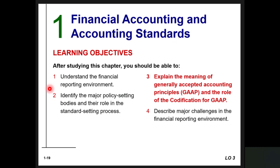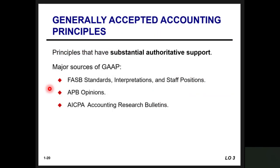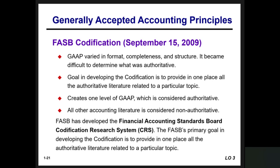Learning objective 3: explain the meaning of generally accepted accounting principles and the role of the codification for GAAP. Generally accepted accounting principles are principles that have substantial authoritative support. Major sources of GAAP include FASB standards, interpretations and staff positions, APB opinions, and AICPA accounting research bulletins. FASB codification came about on September 15, 2009, because GAAP varied in formats, completeness, and structure, making it difficult to determine what was authoritative. The goal was to provide in one place all the authoritative literature related to a particular topic, creating one level of GAAP considered authoritative, with all other accounting literature considered non-authoritative.